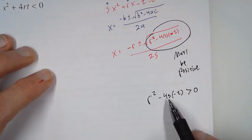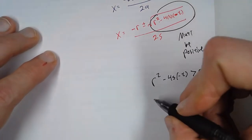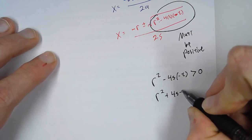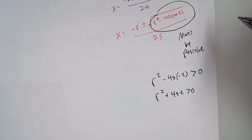Now, be careful. We've got a negative t in here. So we need to write this as r squared plus 4st is greater than zero.